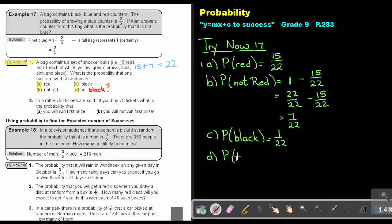And then the last one, the probability of not black. Again, the full bag, which is 1, minus that 1 over 22. Again, it's 22 over 22 minus that 1 over 22. And that will give me 21 over 22.